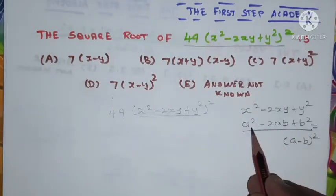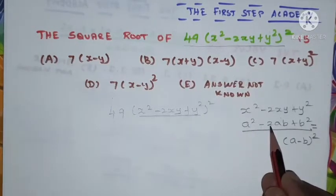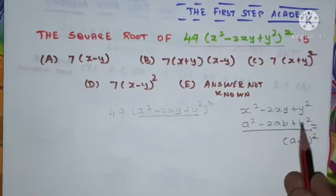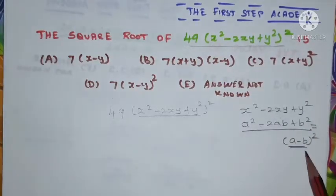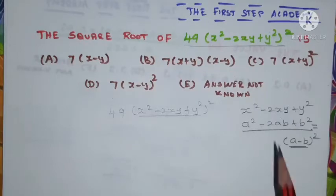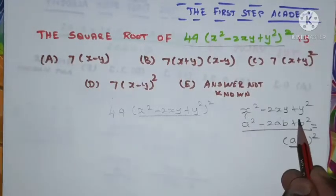This is one of the simple algebraic formulas: if it is a squared minus 2ab plus b squared, then that can be written in the form (a minus b) whole squared, where here a is x and b is y.